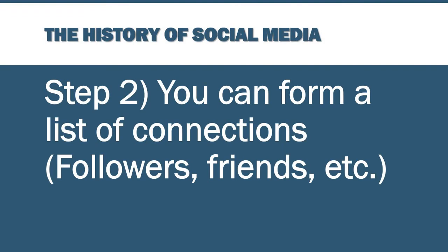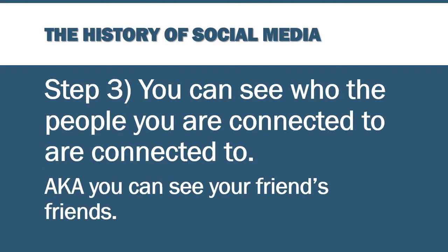Step two, you can form a list of connections. There are other people that you can choose to follow, or be friends with, or see the kind of stuff they're posting and reposting — so it allows you to have that connection. And then finally, step three — this is one of the steps that we tend to forget about when we talk about social networking — you can see who the people you are connected to are connected to. The easiest way to describe that is saying you can see your friends' friends. And that's important because we would need the ability to have that for a social network to reach far enough out to connect and be successful.